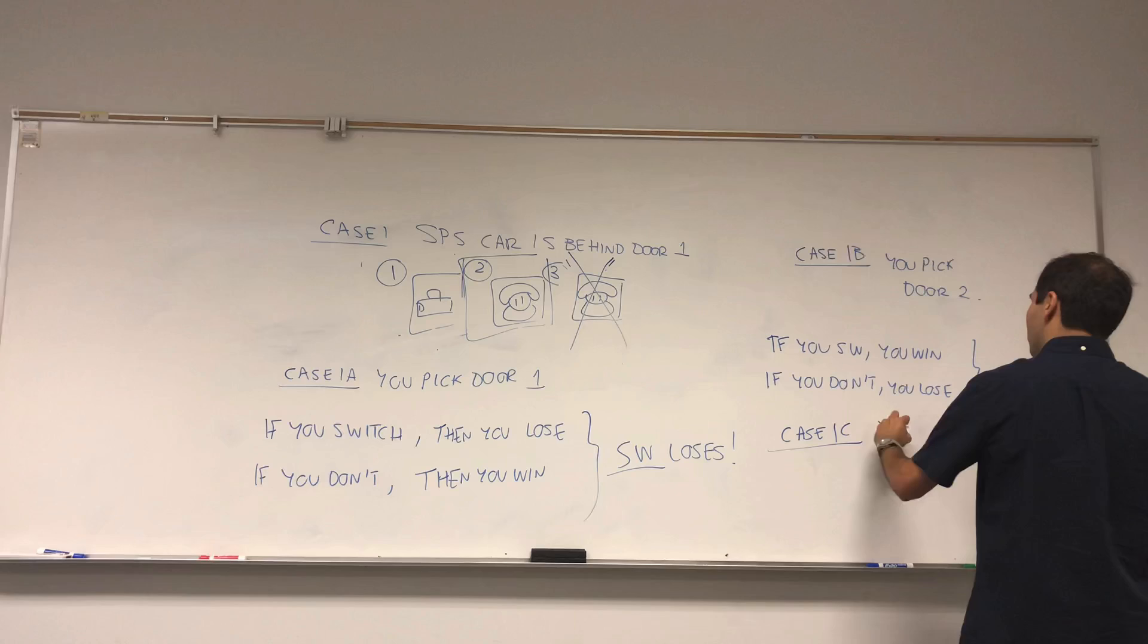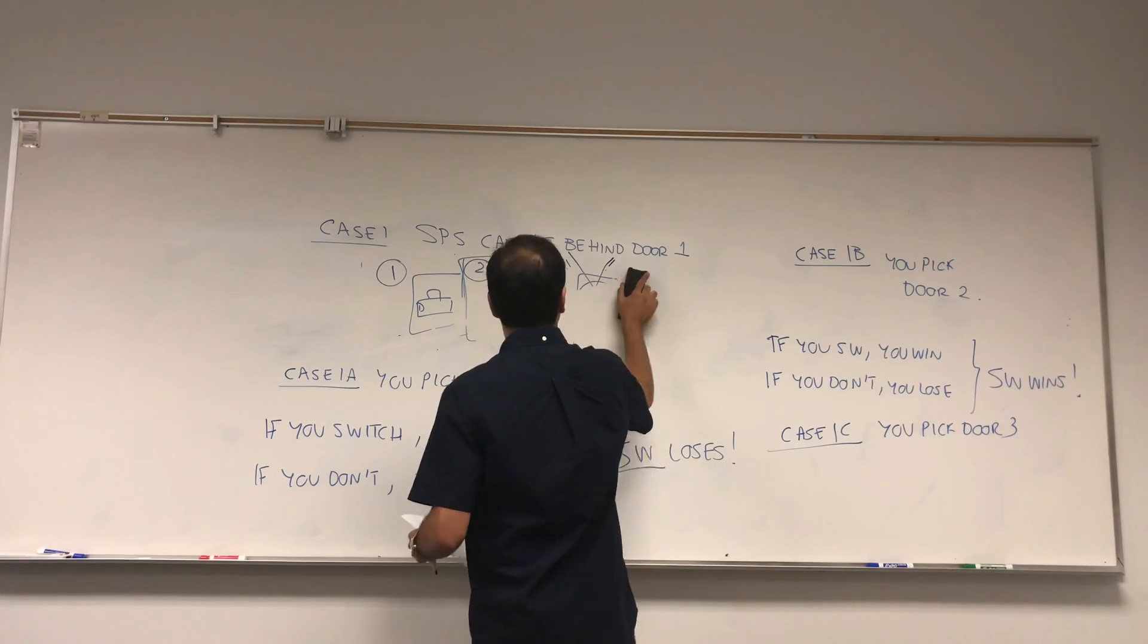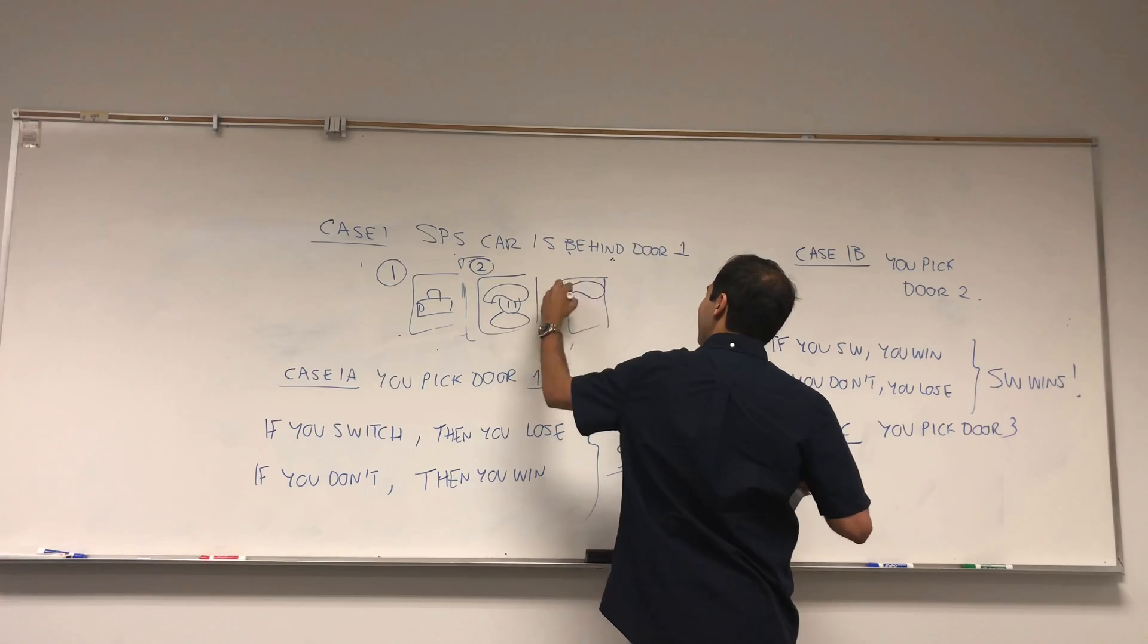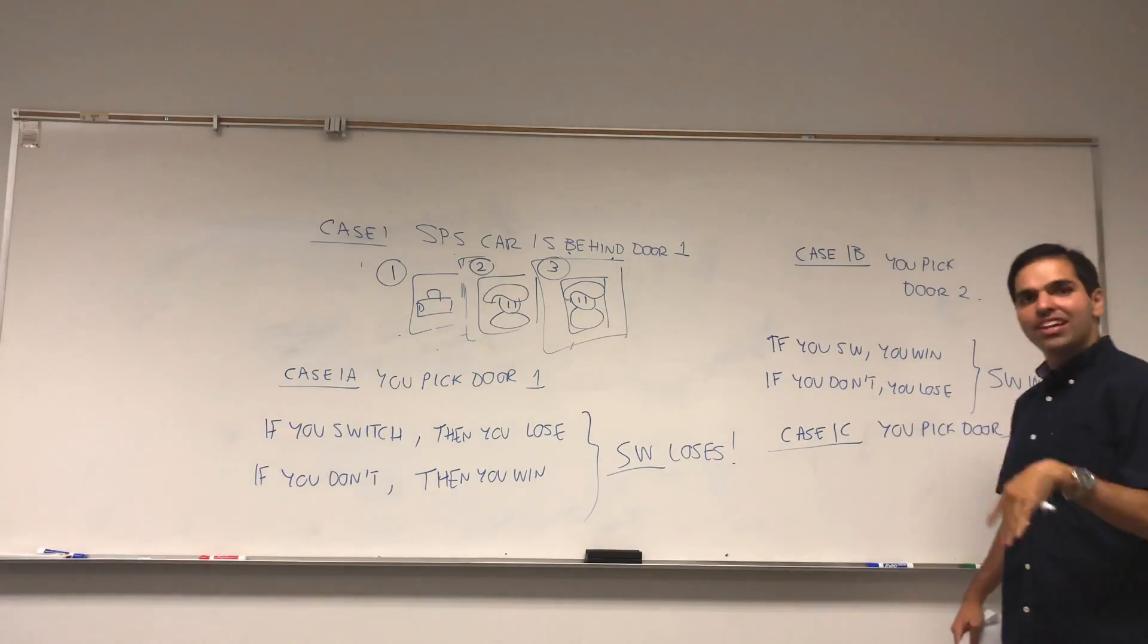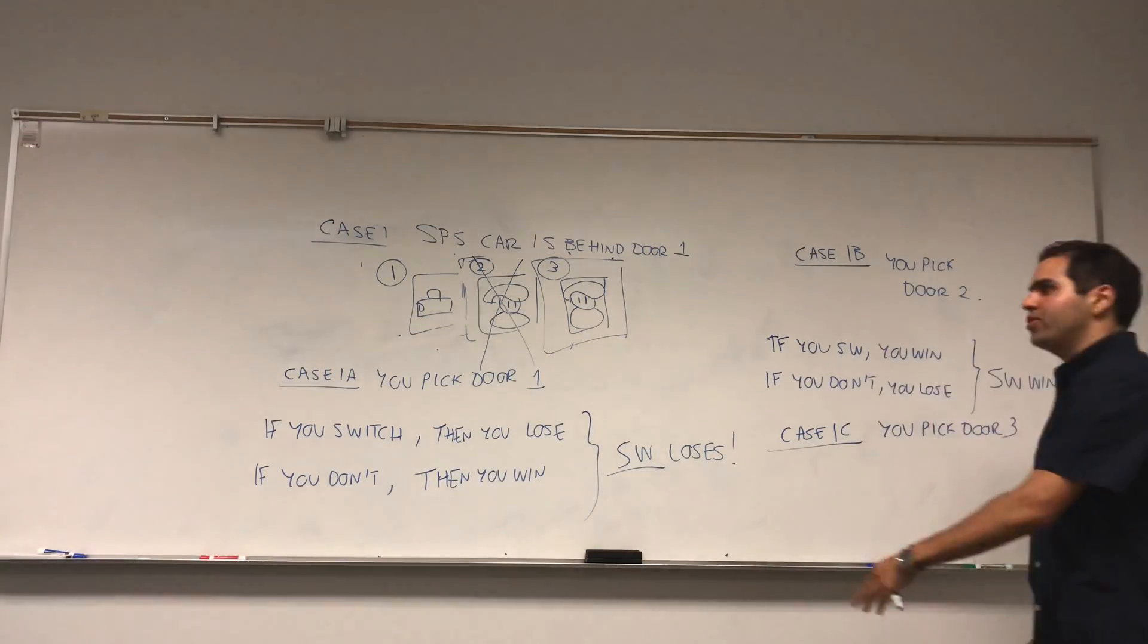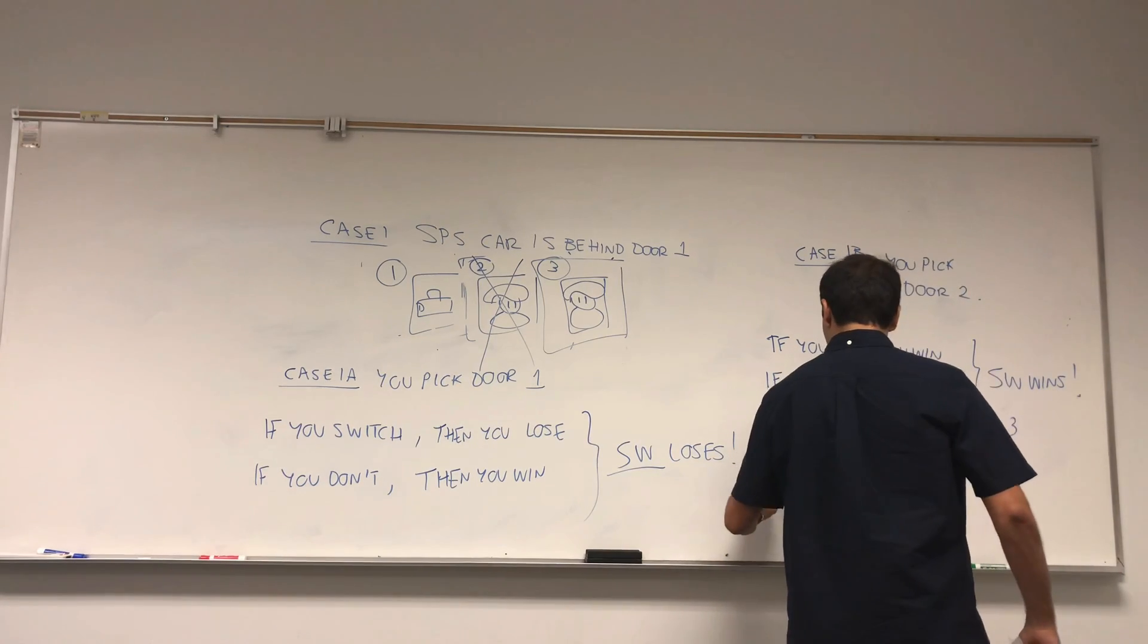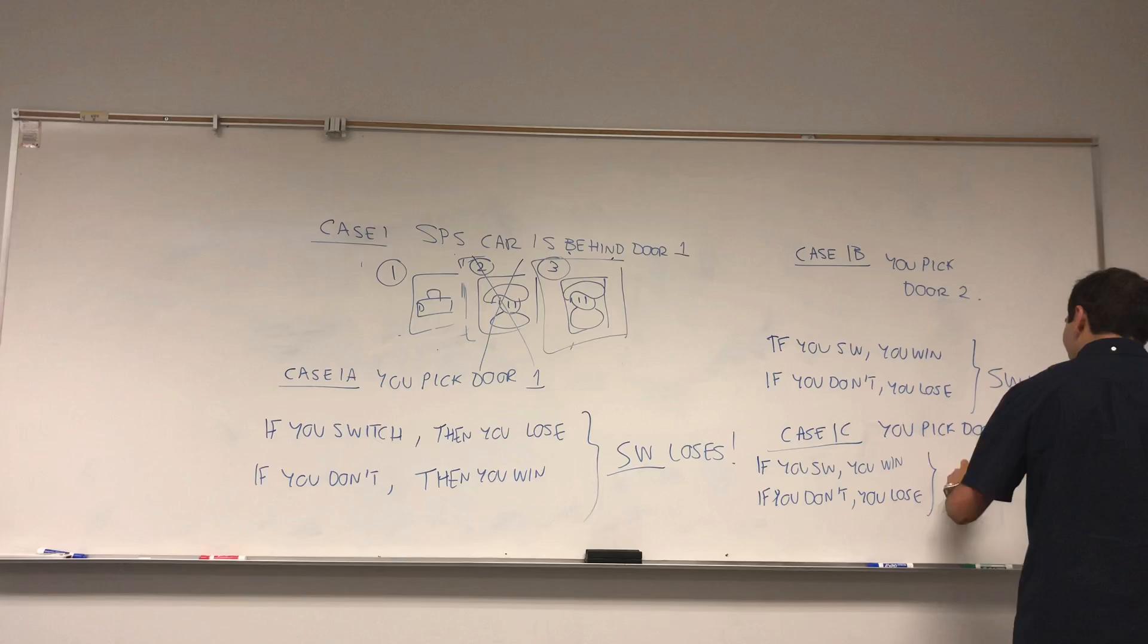All right, and lastly, so in this case, you win by switching. And lastly, suppose if you pick door three. So again, we draw this picture. So you have that zonk here. Again, I like this beret here, it's very nice. Suppose you pick this door here, then again, the host has to eliminate a door which doesn't have a car, which has to be door two. And here, it's the same situation. If you switch, then you win the car. So if you switch, you win. And if you don't, if you stay with your choice, you lose. So here, switching wins again.